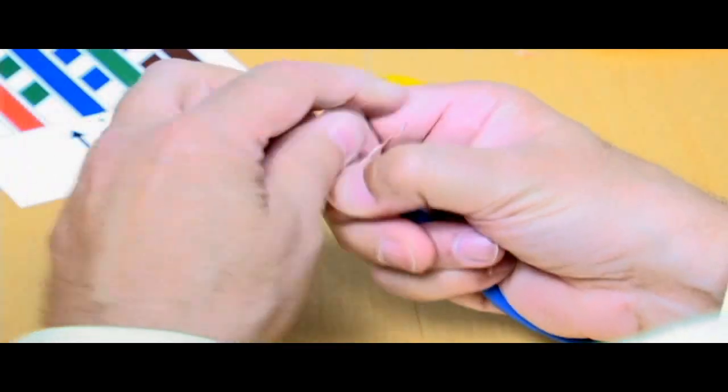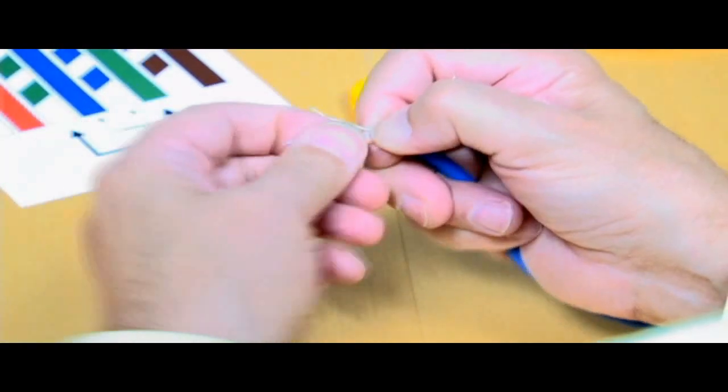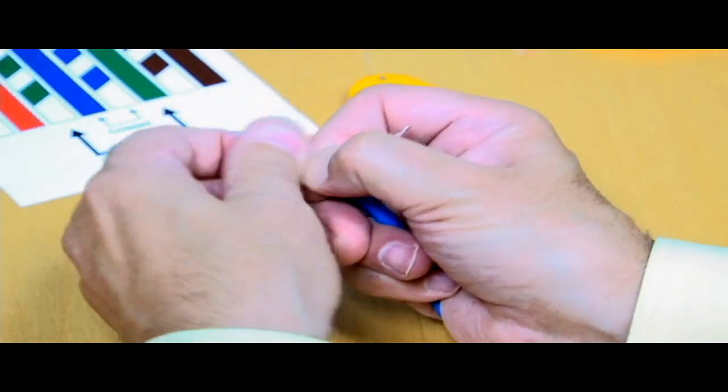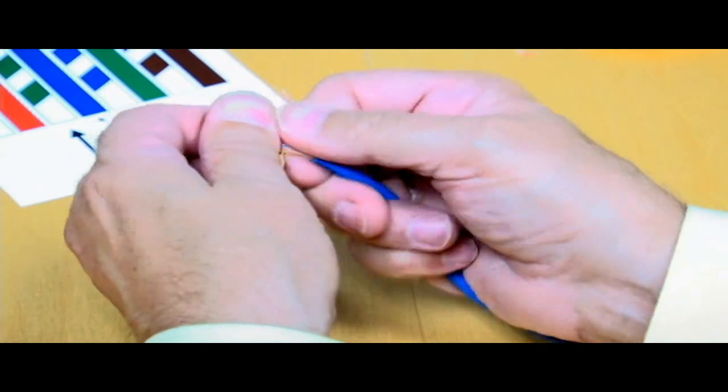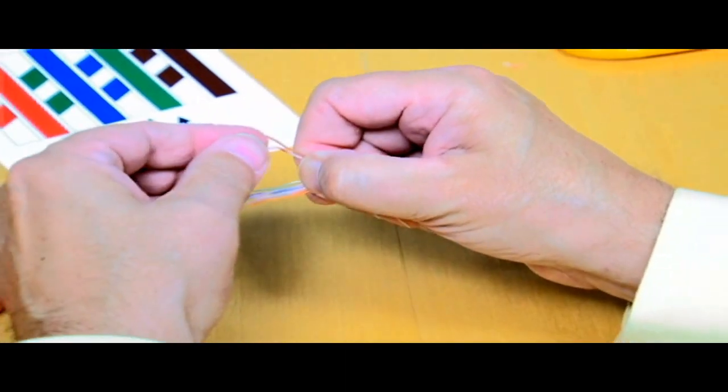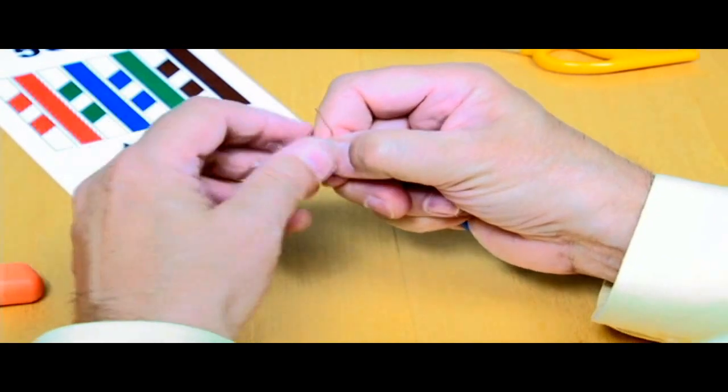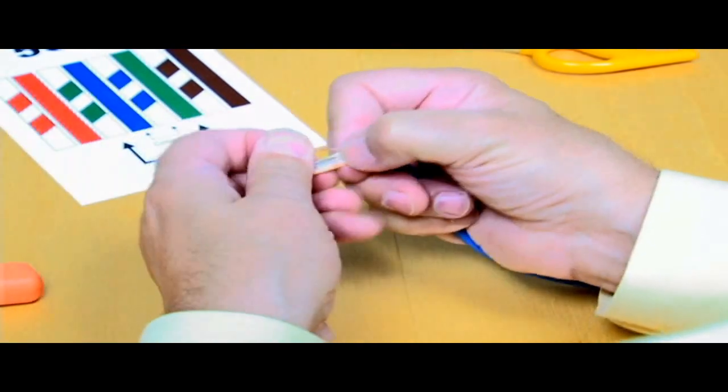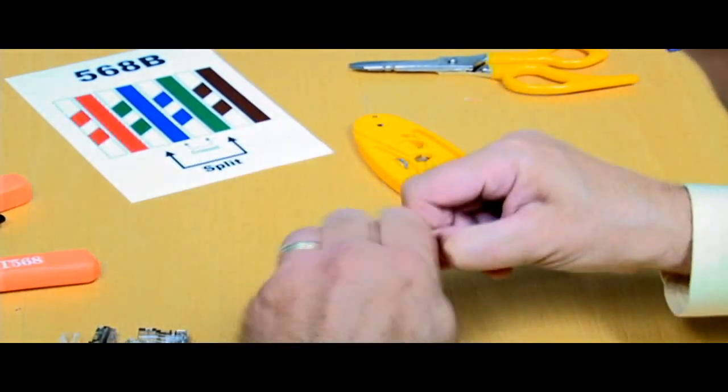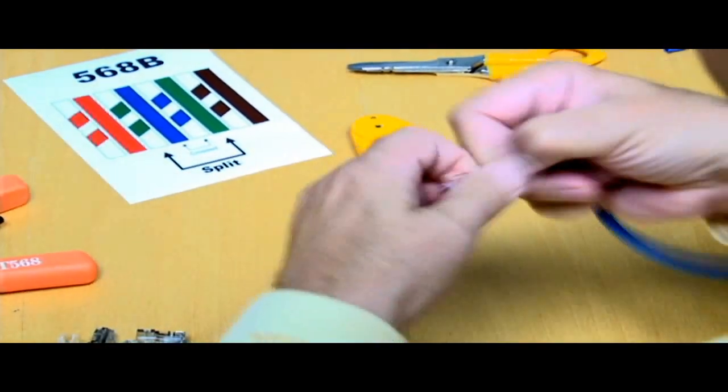The next conductor is that one we set aside. We need that green one, so we'll lay that green one down next. And then the last pair we need to unlock will be the brown pair. The white with the brown stripe goes next, and then the solid brown conductor. We lay them all down there together and make them as straight as we can get them.